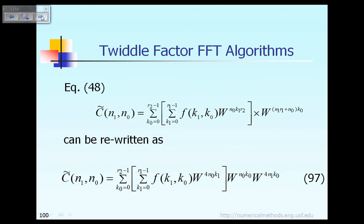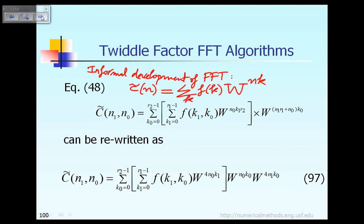According to the earlier formula, when we talk about the informal development of Fast Fourier Transform, at that time we say the unknown vector C tilde expressed based on the index small n is equal to the summation on the index small k of f of k multiplied with w raised to the power nk. Now, because we assume that the small index n can be expressed in terms of the two indexes n1 and n0, the summation on k now becomes a double summation on k0 and k1.